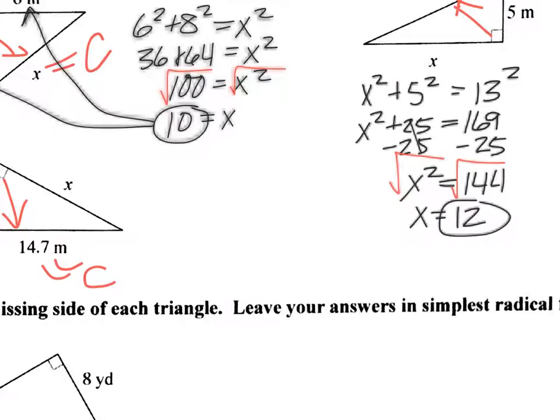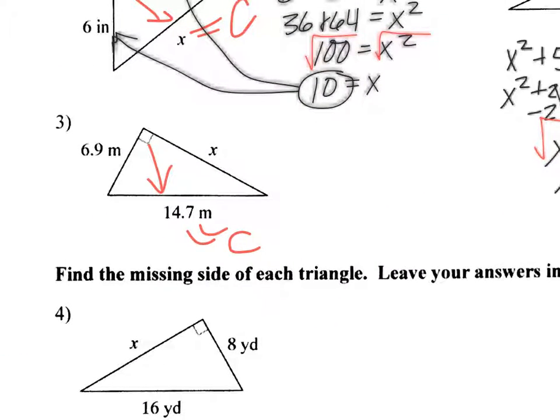Okay, let's continue. Okay, this one has decimals, so it means our answer is probably going to have decimals in it. Again, we know C. So we do 6.9 squared plus x squared equals 14.7 squared. So obviously, with decimals, I'm going to have to have calculators. So that's 47.61 plus x squared equals 216.09.